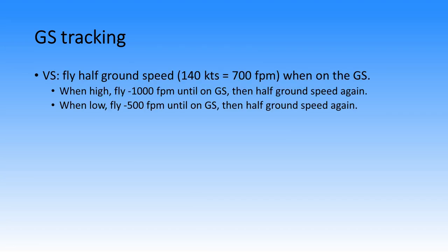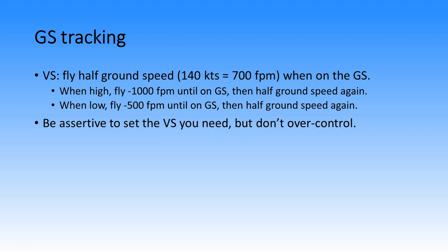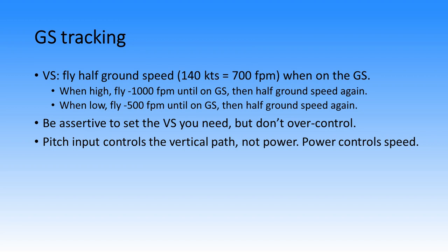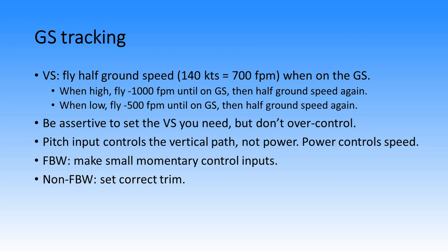To track the glide slope: fly vertical speed as mentioned — fly half the ground speed. So if ground speed is 140 knots, fly 700 feet per minute when on the glide slope. When above the glide slope, fly 1000 feet per minute down until back on, then half ground speed again. When below the glide slope, fly 500 feet per minute down until back on, then half ground speed again. Be quite assertive to set the vertical speed you need, but don't over-control. Pitch input should control the vertical path — not the power. Power should control the speed. For fly-by-wire aircraft, make small momentary control inputs. For non-fly-by-wire aircraft, make sure you trim the aircraft correctly.